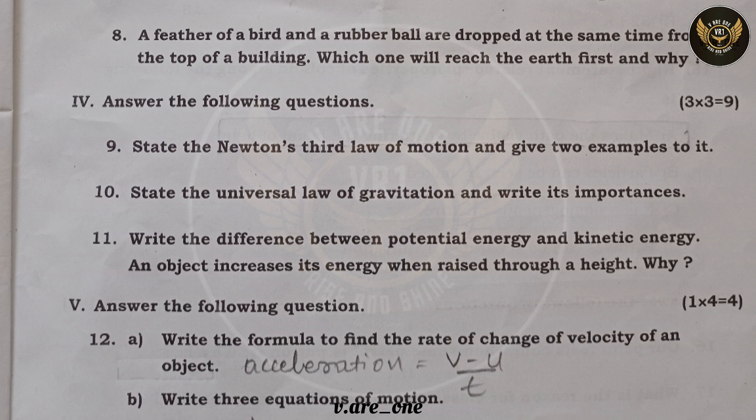Question ten: state the universal law of gravitation and its importance. The law states that every object attracts another object; the force of attraction is directly proportional to the product of their masses and inversely proportional to the square of their distance. Its importance: this law binds us to the earth, helps planets revolve around the sun, the moon revolve around planets, and causes tides and waves.